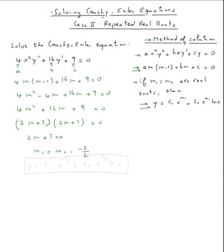So the solution is right here. So y, that's the formula, c one x to the m one, m one happened to be negative three two plus c two x to m one, negative three half times ln of x.